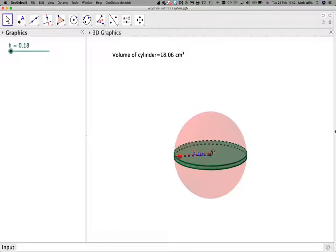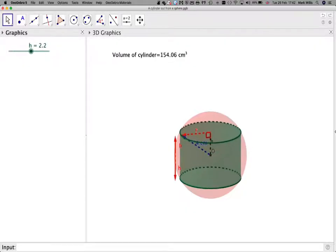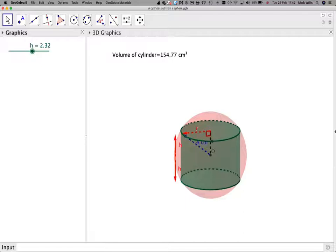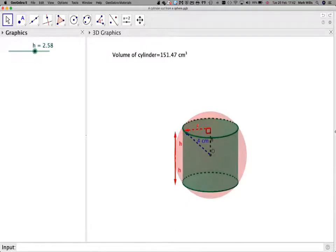And then if I move up like that, obviously I want the maximum volume. What is the maximum volume? It's going to be somewhere around here, because you can see there it's getting smaller and there it's getting larger, that I can cut out of this sphere.